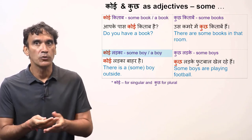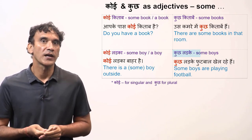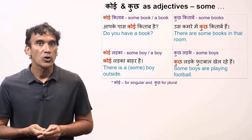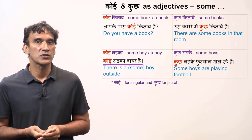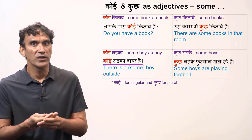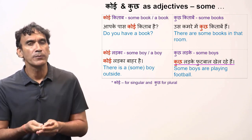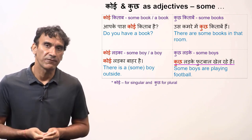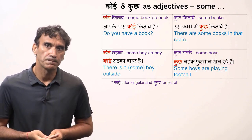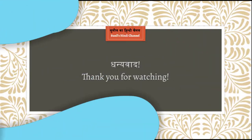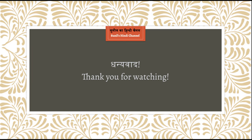Koi ladka means some boy or a boy, and kuch ladka means some boys. Koi ladka baahar hai — There is a boy outside, or there is some boy outside. Kuch ladka football khel raha hai — Some boys are playing football.